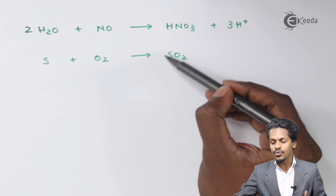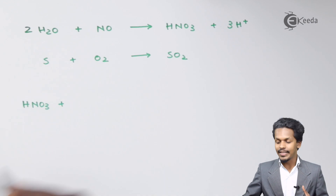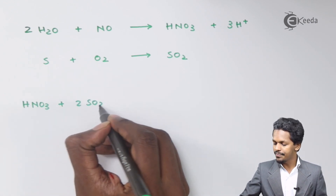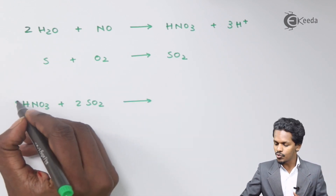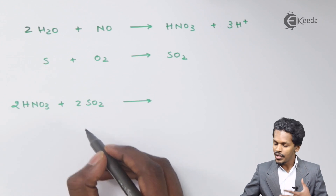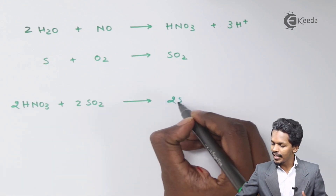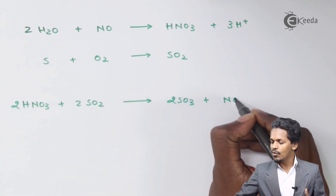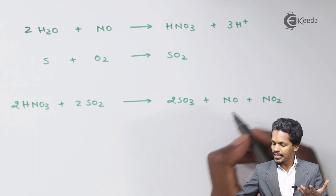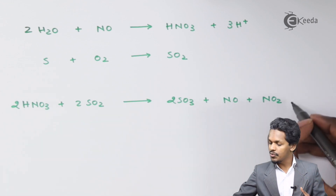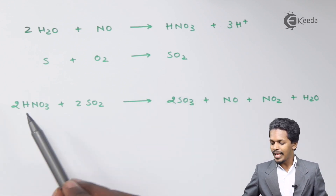There is HNO₃ and SO₂ present. When HNO₃ reacts with two moles of SO₂, it converts the SO₂ into two moles of SO₃, with the liberation of nitric oxide (NO), nitrogen dioxide (NO₂), and water as a byproduct. So HNO₃ plays a very vital role in converting SO₂ into SO₃.